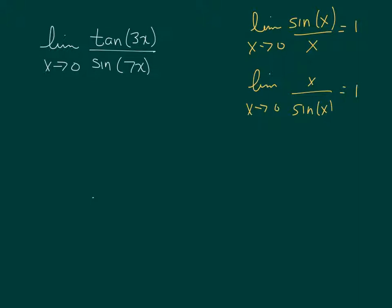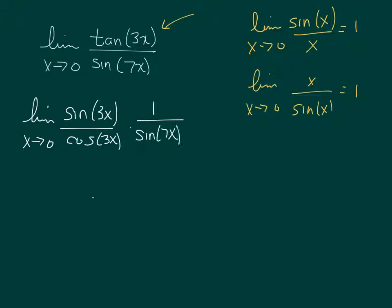So what I would like to do is I would like to get first the tangent in terms of sine and cosine. So let's do that. The limit as x approaches 0, so the tangent of 3x becomes sine of 3x over cosine of 3x. And I'm just going to chunk this 1 over sine of 7x out to the side.